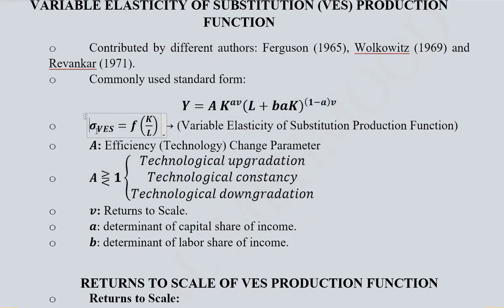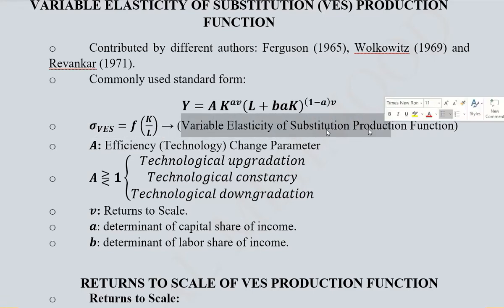The elasticity of substitution (σ) will be variable because both capital and labor variables are involved in the formula for σ_VES. In contrast, the constant elasticity of substitution only involved the parameter rho with no variables—no capital or labor. Therefore, we call it the variable elasticity of substitution production function.